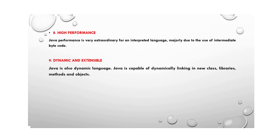High performance: Java's performance is extraordinary for an interpreted language, majorly due to the use of intermediate bytecode. Java's architecture is designed to reduce overhead during runtime, and the incorporation of multi-threading improves the execution speed of the program. This property is called high performance. The last feature is dynamic and extensible.